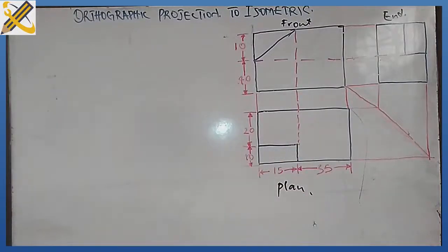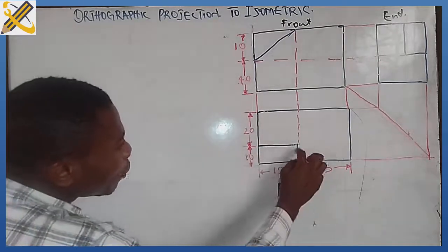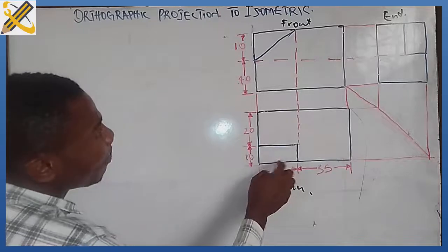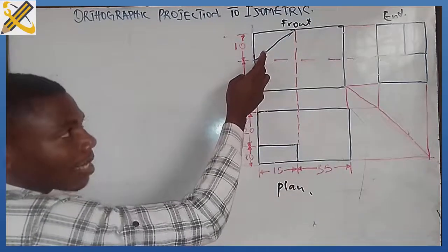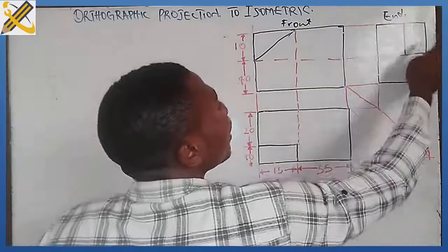So take note of these two portions. What does that imply? That implies that this portion you are seeing here, this portion you are seeing in the plan, this is here. While this view you are looking here...